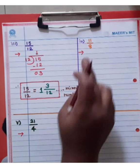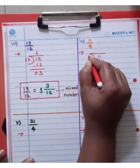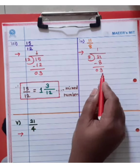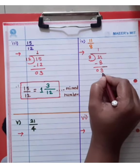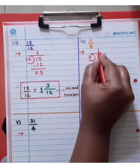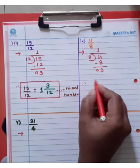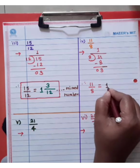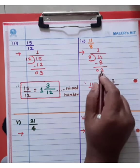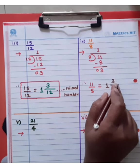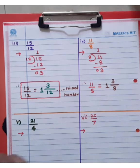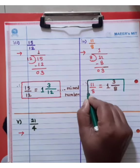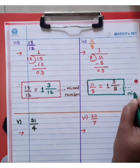Then fourth example. 11 divided by 8. 8 goes into 11 once with remainder 3. So 11 by 8 equals 1 and 3/8. This is the mixed number.